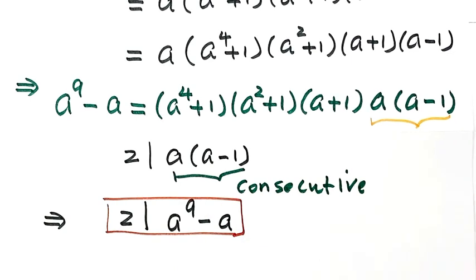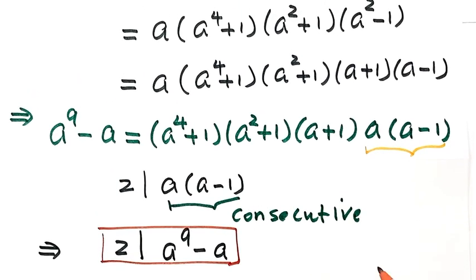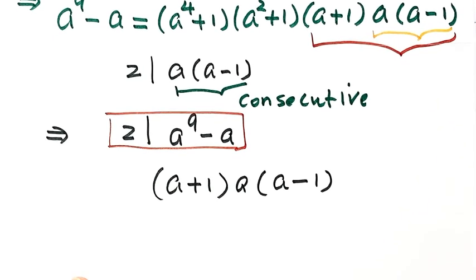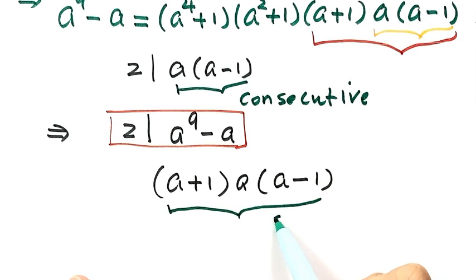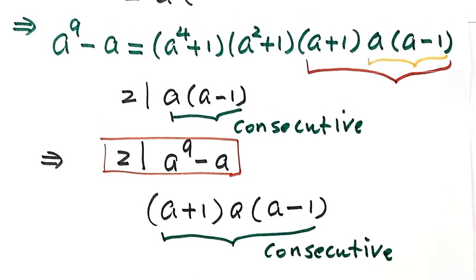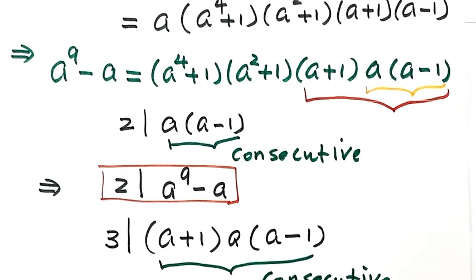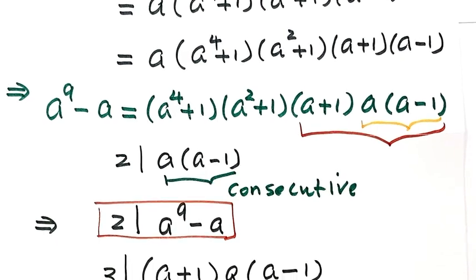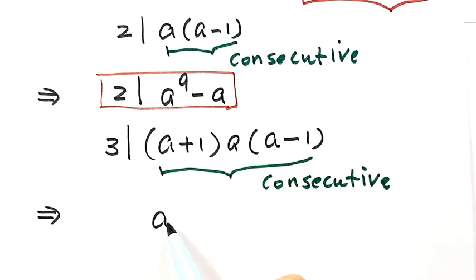Now let's see if it's divisible by 3. Looking at a plus 1 times a times a minus 1 — because a is an integer, this is a product of three consecutive integers. For three consecutive integers, one of them must be divisible by 3, so the product is also divisible by 3. Therefore, a to the power of 9 minus a is also divisible by 3.